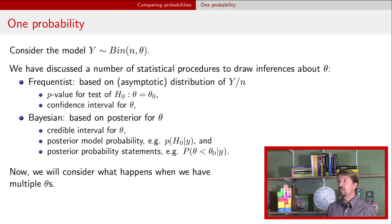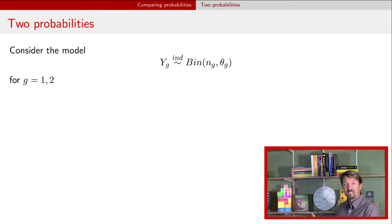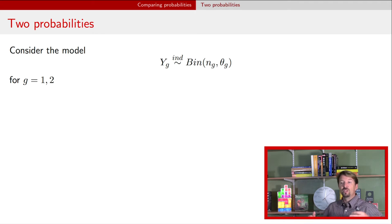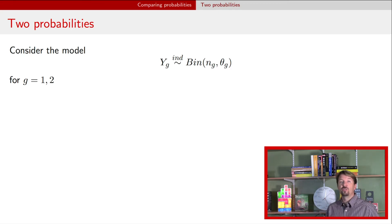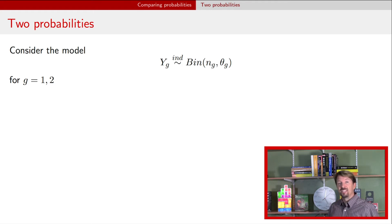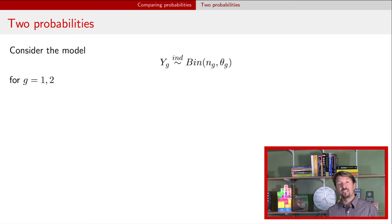Now we're going to turn this around and say, instead of just having a single probability, what happens if you have multiple probabilities? That is, what happens if your model looks like this? You now have binomial observations that are subscripted. You might have two different groups, G1 and G2, with data Y1 from group 1 and Y2 from group 2. Y1 is the number of successes for group 1 and Y2 for group 2. There's no reason those two groups have to have the same number of attempts, so you have N1 and N2. Now you have two different values for theta.